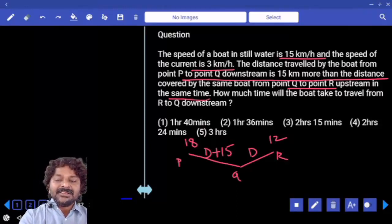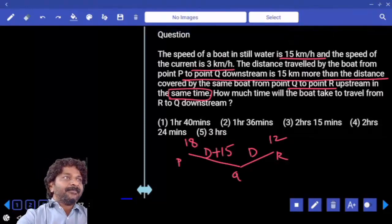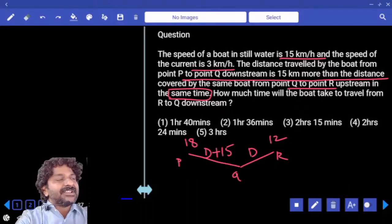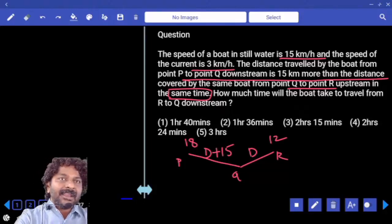Here, same time they said. Here is the logic: if time is constant, what is the proportionality between distance and speed? Directly proportional.